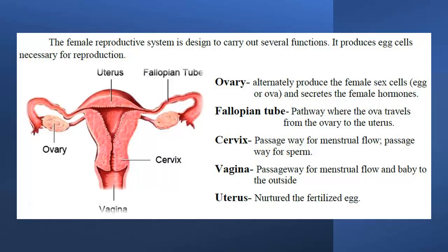The female reproductive system is designed to carry out several functions. It produces egg cells necessary for reproduction. Female parts include: ovary, uterus, fallopian tube, cervix, and vagina. Ovary: alternately produces the female sex cells and secretes the female hormones.